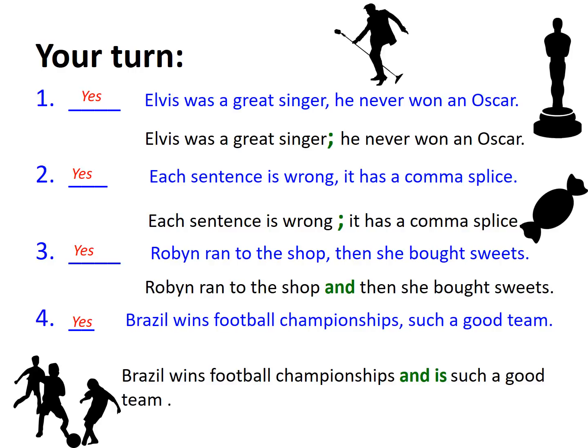The big takeaway about comma splices is that they are the wrong way of combining two independent clauses. If you've got two independent clauses — meaning they make sense on their own — you should be using something much stronger than a comma to join them: either a conjunction such as 'and' or 'but', or a semicolon, which is much stronger glue. The other option is to make them two simple sentences.